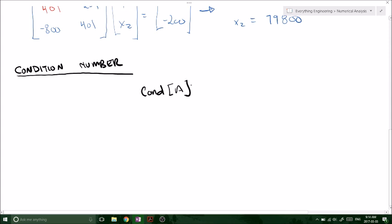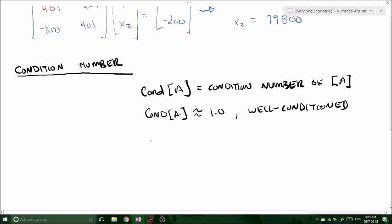And it's denoted as cond A, meaning the condition number of A. And if the condition number of A is approximately equal to 1, we can say it is well-conditioned. And then if it is much greater than 1, then it is ill-conditioned.